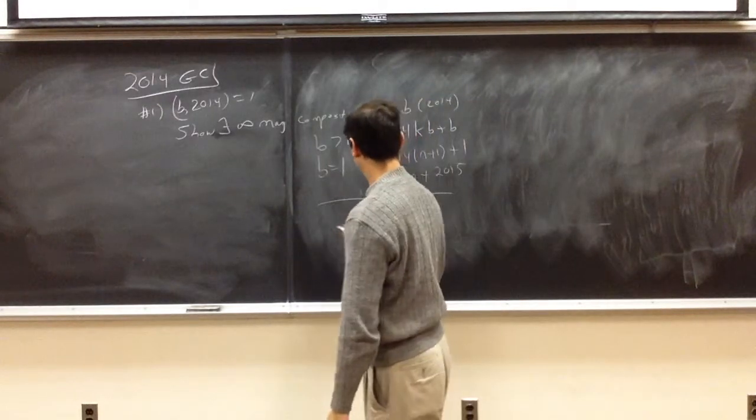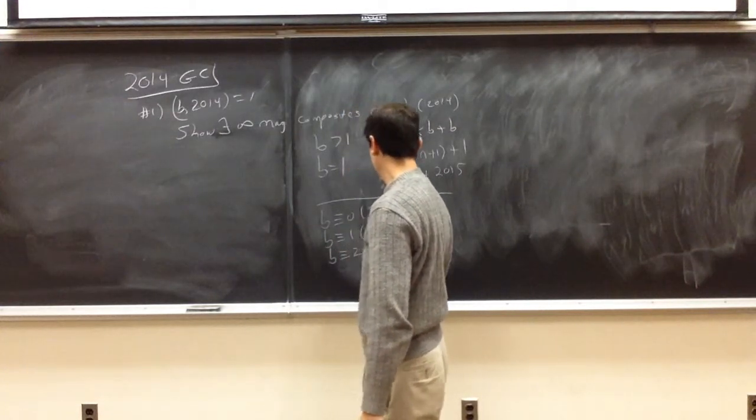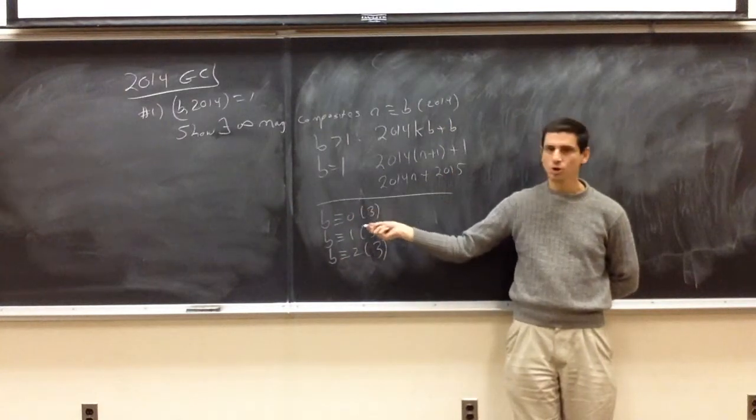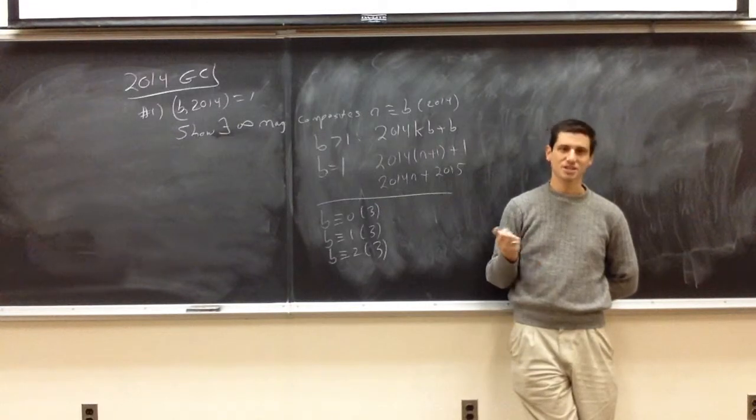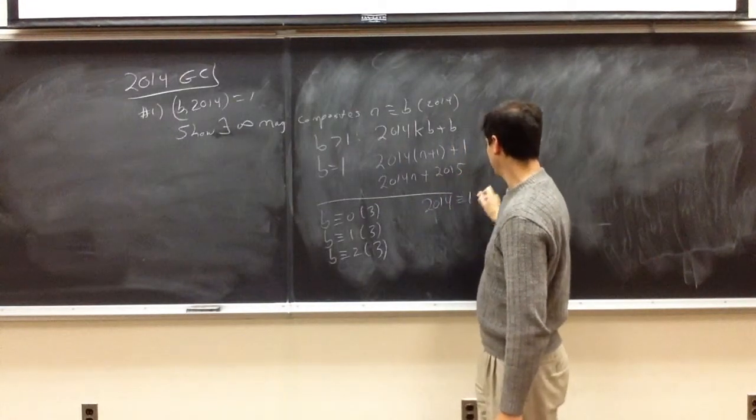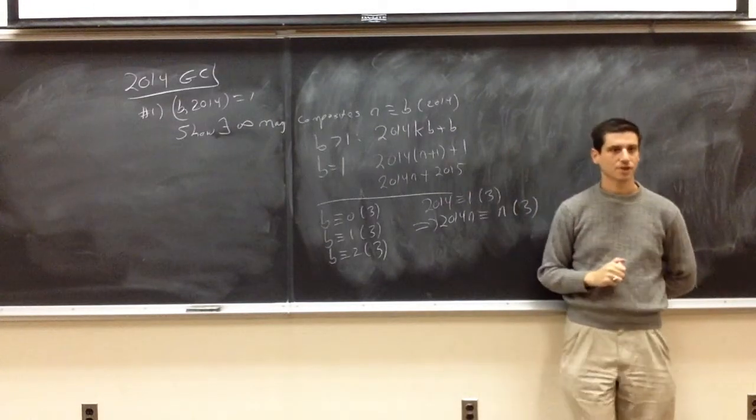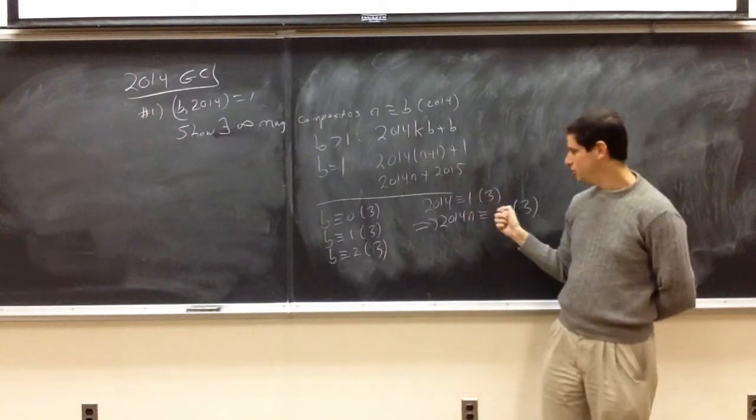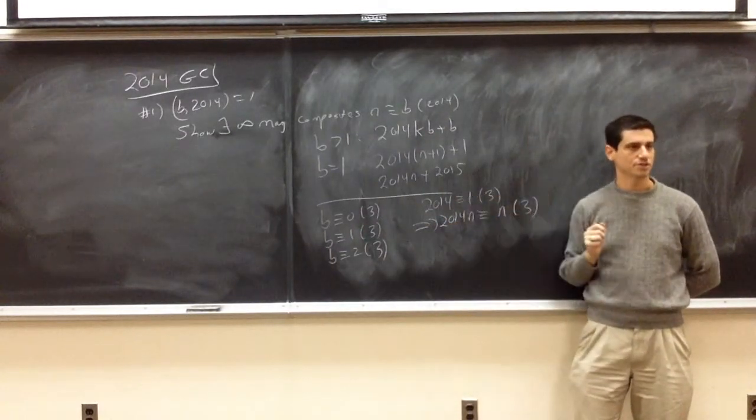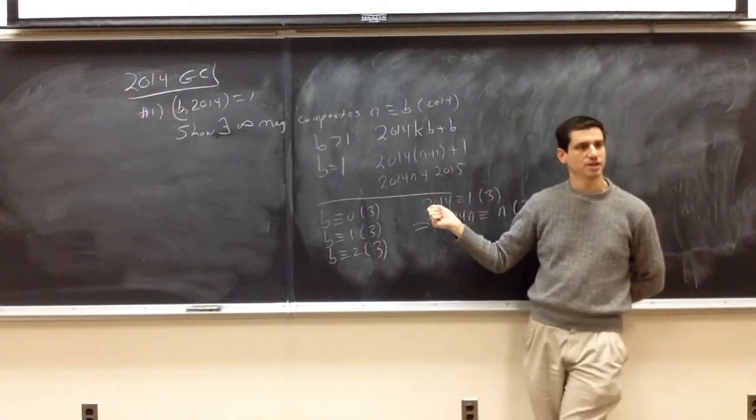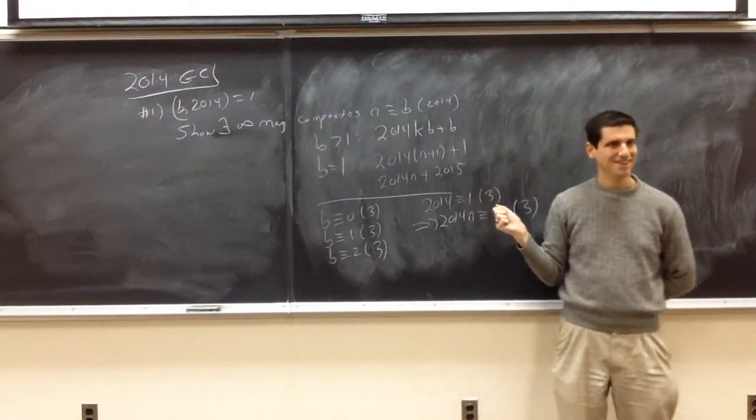Another way which a lot of people approached it is to look at B congruent to 0 mod 3, B congruent to 1 mod 3, and B congruent to 2 mod 3. This means when you divide B by 3, you get a remainder of 0, 1, or 2. What is the number 2014 when you divide by 3? Somebody notice 2013 is a multiple of 3. 2014 is congruent to 1 mod 3, therefore 2014 N is congruent to N mod 3.